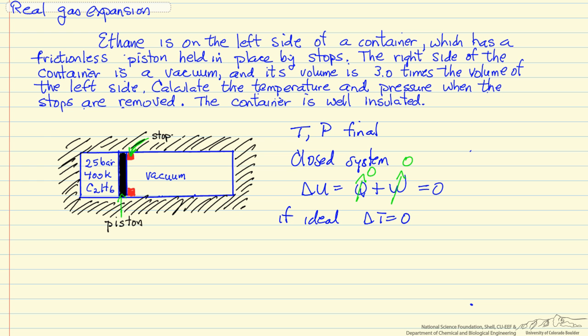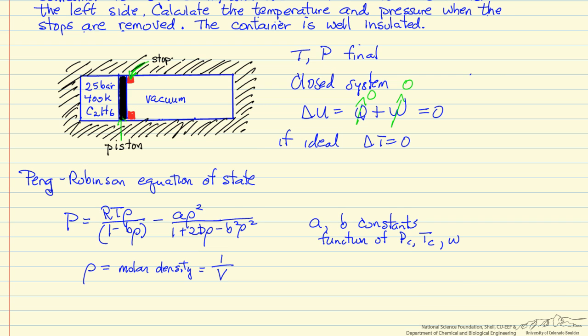What we're going to use is the Peng-Robinson equation of state. Here's the Peng-Robinson equation of state, where the pressure is related to density, which is the inverse of the molar volume, and there are two constants.